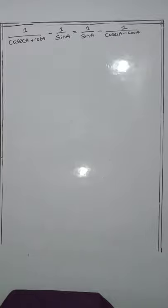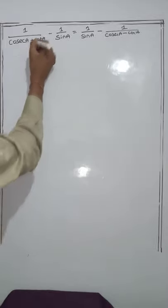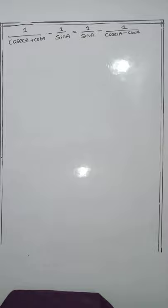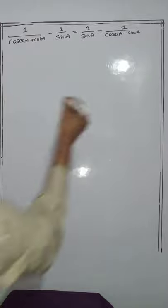The identity to prove is: 1 by cosec A plus cot A, minus 1 by sin A, equals 1 by sin A minus 1 by cosec A minus cot A.